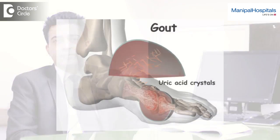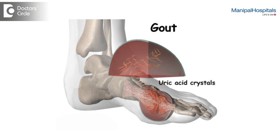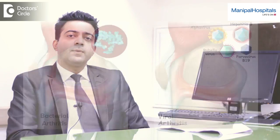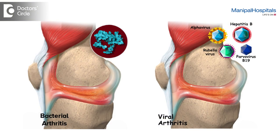There are other forms of arthritis, such as crystal-induced arthritis, also called gouty arthritis. A small population involves bacterial arthritis, viral arthritis, or arthralgia.